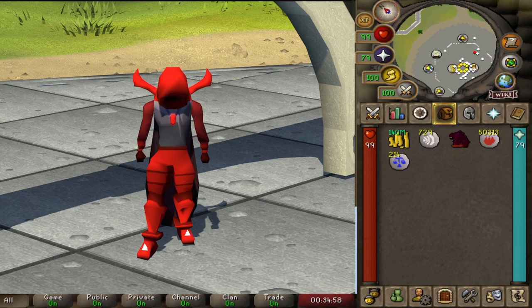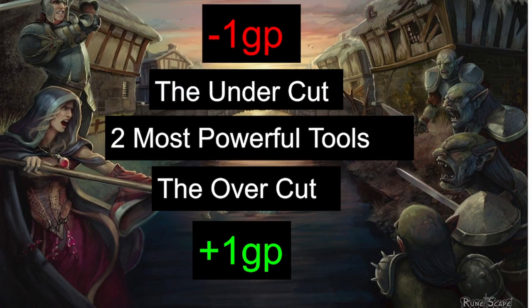Now let's talk about your two most powerful tools as a flipper: the undercut and the overcut. The Grand Exchange is a competitive marketplace where you're competing with everyone else trying to sell their stuff. The undercut helps you sell your items by listing one GP less than what's currently on the market so you sell first. The overcut helps you buy items over other players by offering one extra gold than what everyone else is willing to pay.